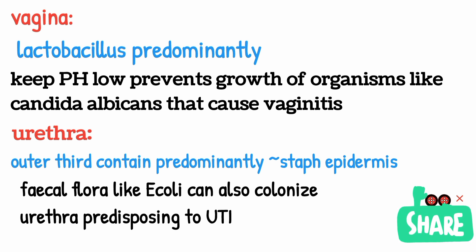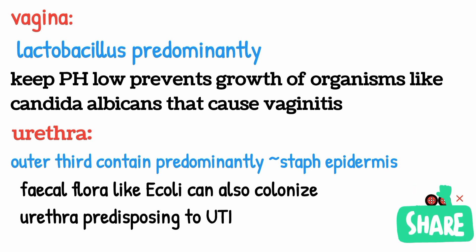E. coli colonization of the urethra can predispose to urinary tract infection, making it one of the most important organisms in the pathogenesis of UTI. So we have discussed most of the important normal flora in all the key regions — the oropharynx, skin, throat, nose, and gastrointestinal tract.